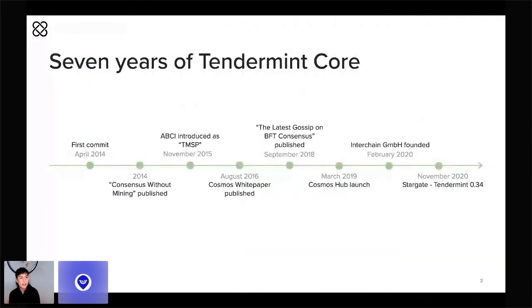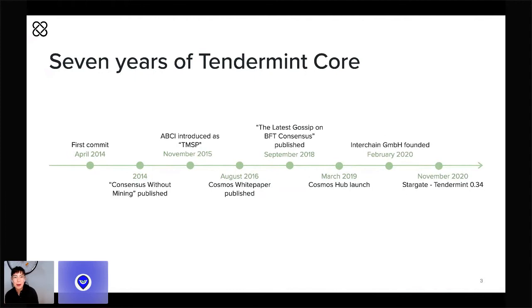Jay Kwan started Tendermint Core in 2014 as a one-man project. The first Tendermint white paper, titled "Consensus Without Mining," was published shortly thereafter. Although it may sound a little bit milquetoast now, the idea that you could run a public blockchain without proof of work was pretty novel at the time.